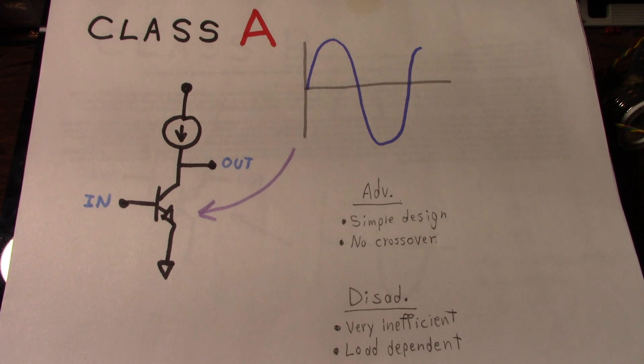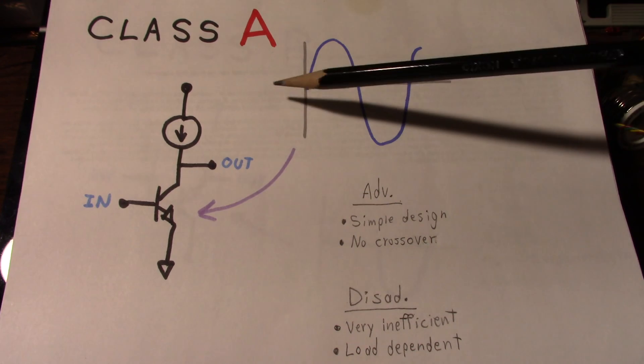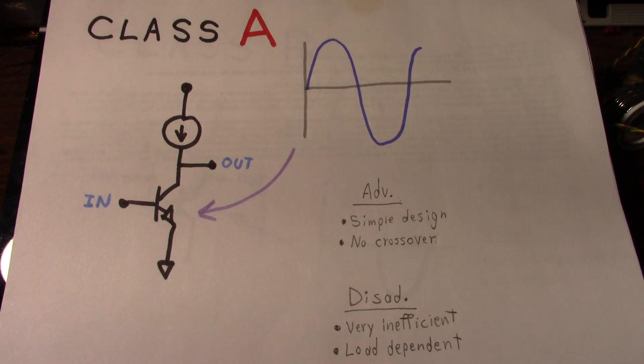Some audiophiles like the class A amplifier because there's no crossover point. The output devices are continuously conducting the signal. The signal is not being handed off to another part of the output stage. But I do think you give something up with the simpler designs. You're going to have more lower order harmonics, but those are not necessarily detrimental to the music. And this leads me into my opinion of the class A amplifier.